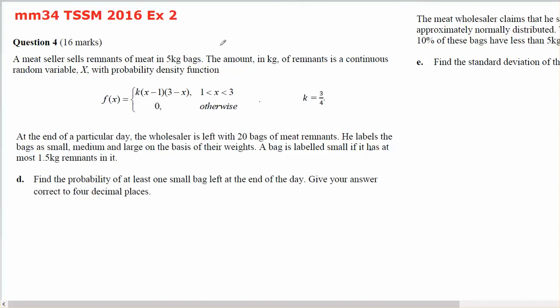This is for Year 12 Methods that comes out of the TSSM 2016 Exam 2 probability question. So it's 4D and 4E. A meat seller sells meats in 5kg bags. The amount is a continuous random variable, and we've already shown that K equals 3 quarters.